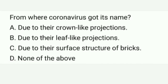From where did coronavirus get its name? Options are: A. Due to their crown-like projections, B. Due to their leaf-like projections, C. Due to their surface structure of bricks, D. None of the above. Correct option is A. Due to their crown-like projections.